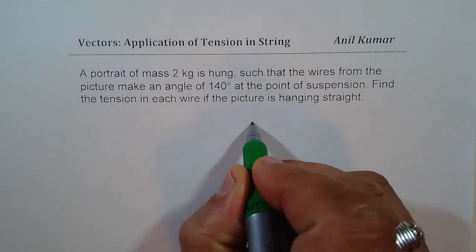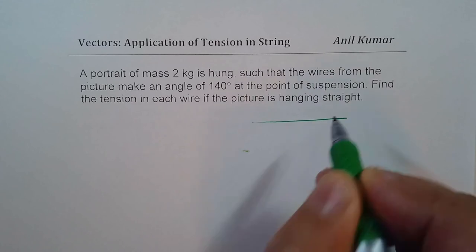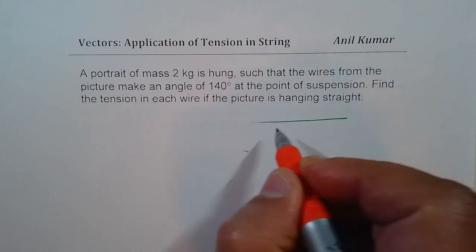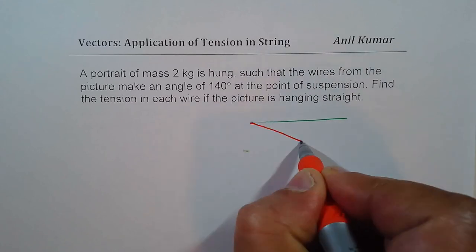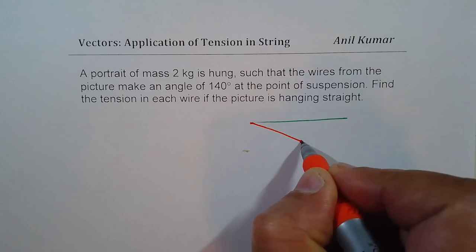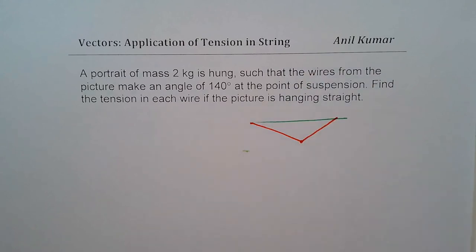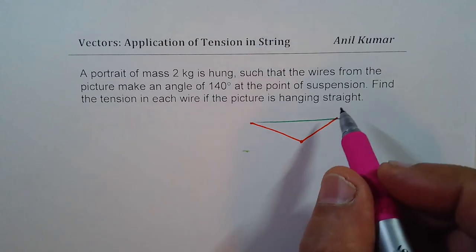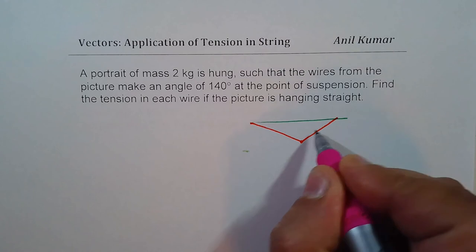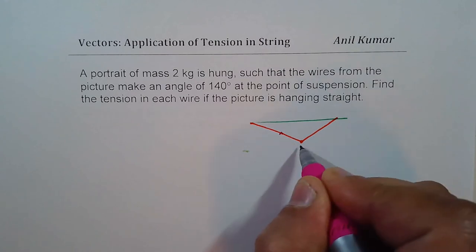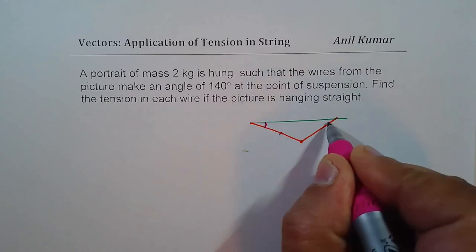Let's try to make the diagram first. A painting is hung with two strings like this. When we say that it is suspended straight, that means these two lengths are equal. So these two angles are equal, that's what we're trying to say.